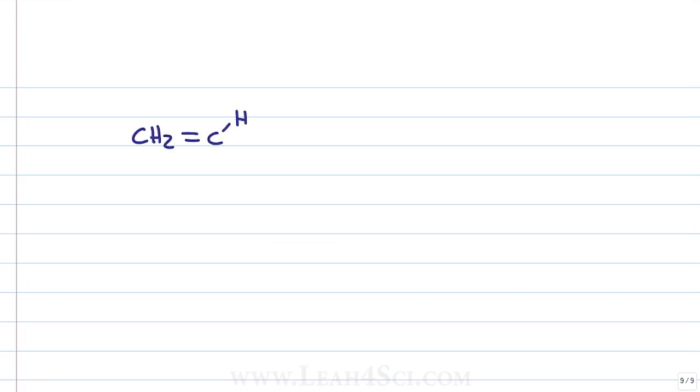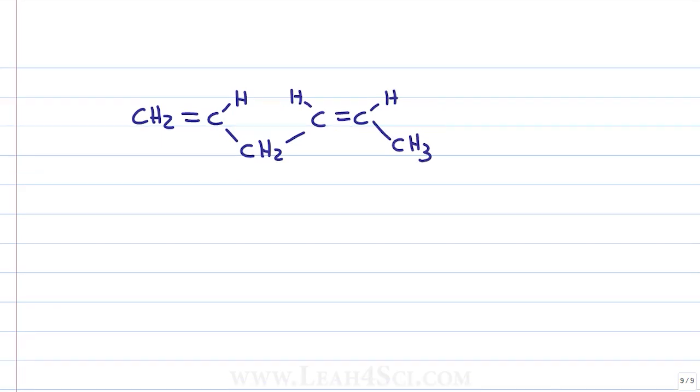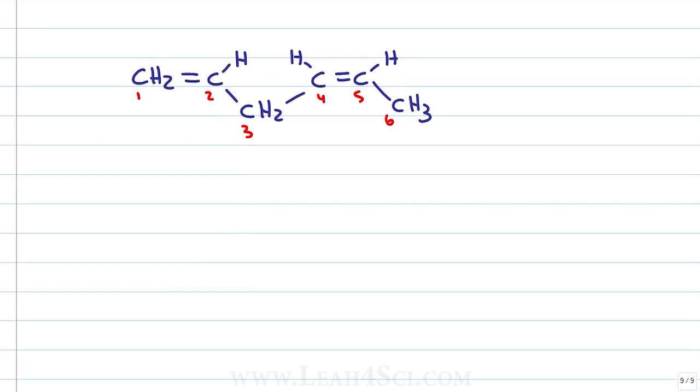Once again we're given a molecule where all of the atoms are drawn out and even though it still looks simple, I urge you to get into the habit of drawing this as a line structure. Trust me, it'll save you a lot of confusion later. So what do we have? If I number this, not yet for the sake of naming, just for the sake of making sure I redraw the same number of carbons, I can even copy the shape and draw it exactly the same way.